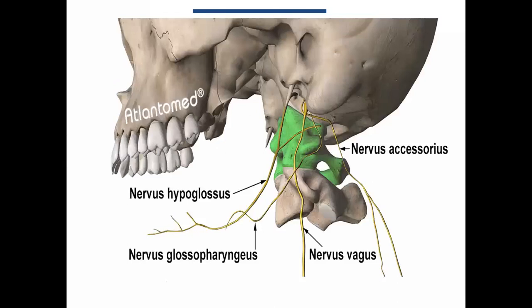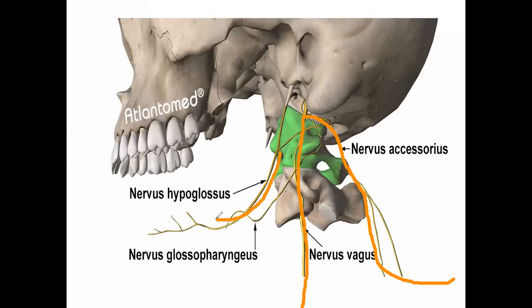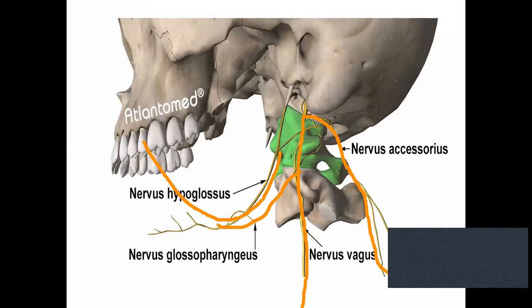This is the hypoglossal nerve. The accessory nerve supplies the sternomastoid. The vagus descends to reach the thorax. The hypoglossal loops to reach the tongue. The glossopharyngeal reaches the pharynx. This is the course of the cranial nerves.